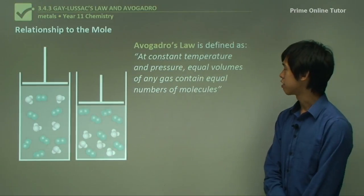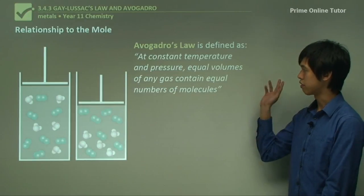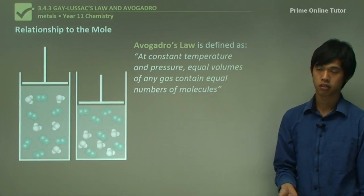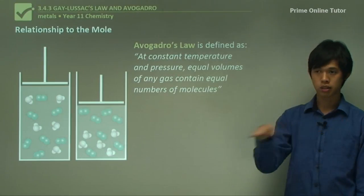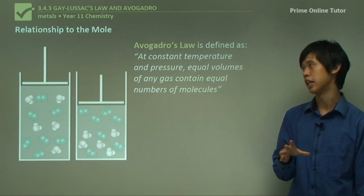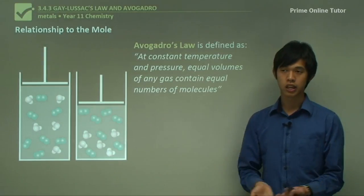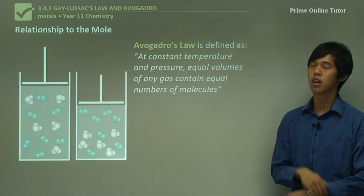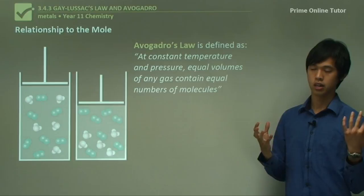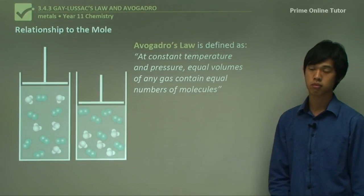Now, Avogadro's law is defined as, at constant temperature and pressure, equal volumes of any gas contain equal numbers of molecules. And that's a big deal. So, at constant temperature and pressure, if you leave the pressure and temperature unchanged, volumes of, like one volume of any gas will have the same number of molecules in it, regardless of what the gas is. If it's oxygen, nitrogen, methane, any of them, they'll always be the same number of molecules.